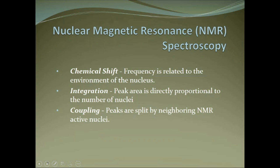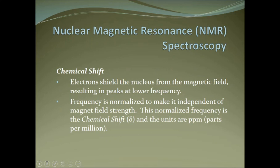For nuclear magnetic resonance spectroscopy, or NMR, there are three things we look at. One is chemical shift, which is a modified frequency related to the environment of the nucleus. We look at integration, which gives quantitative information since peak area is directly proportional to the number of hydrogens giving that signal. And we look at coupling or splitting, which gives information about how hydrogens are connected to one another. We will address these one at a time, starting with chemical shift.